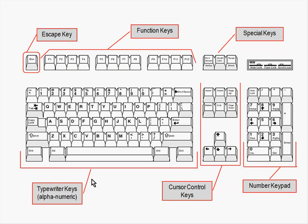There's also a set of cursor control keys — four arrow keys pointing up, down, left, and right — used for navigating around the screen. Above those are other keys to help move your cursor around. Most computers also have a numerical keypad on the right that looks like a calculator or adding machine and works similarly, letting you type numbers or perform other functions.